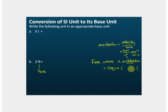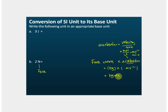Plugging the units in: the unit of mass is kg and the unit of acceleration is m·s⁻². Therefore, the unit of force is kg·m·s⁻². Since the unit of force is newton, we have: newton equals kg·m·s⁻².